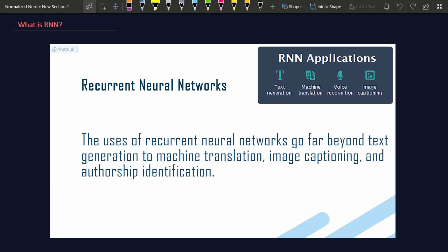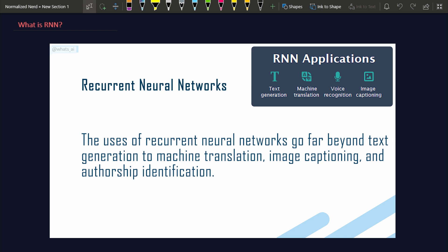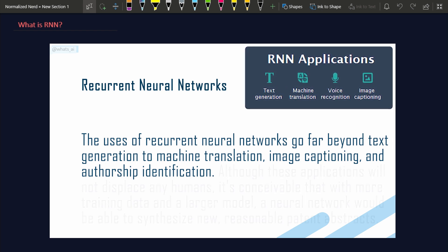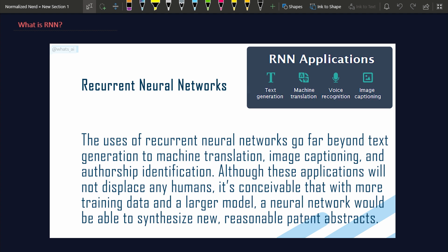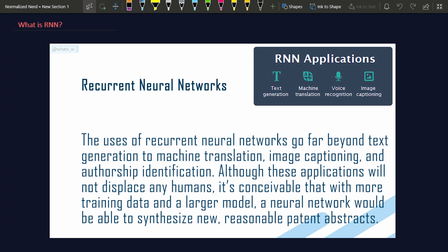The uses of recurrent neural networks go far beyond text generation to machine translation, image captioning, and authorship identification. Although these applications will not displace any humans, it's conceivable that with more training data and a larger model, a neural network would be able to synthesize new reasonable patent abstracts.